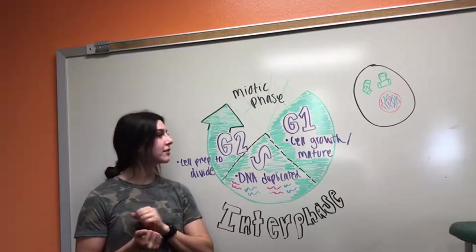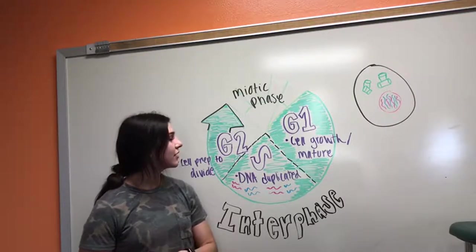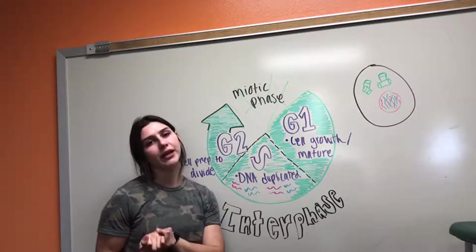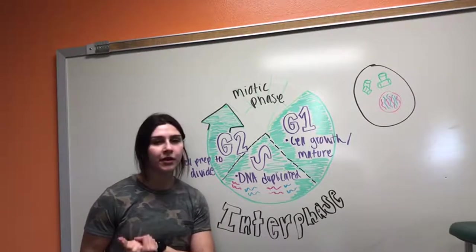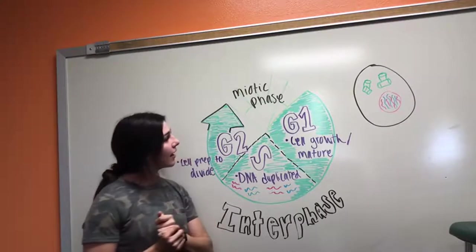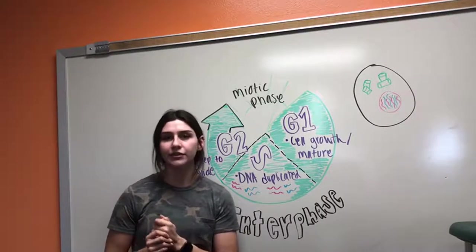So basically what happens is that the cell is at a resting stage, and when ready, it prepares itself for division. The cell is doubling in size, and DNA replicates or copies itself.